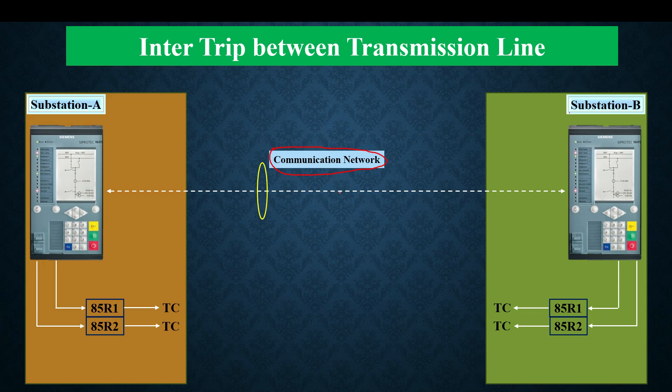Inter trip means that if any protection operates at either substation A or substation B, it should directly go to the other end and operate the lockout relay. At both substations we have two lockout relays named 85R1 and 85R2.